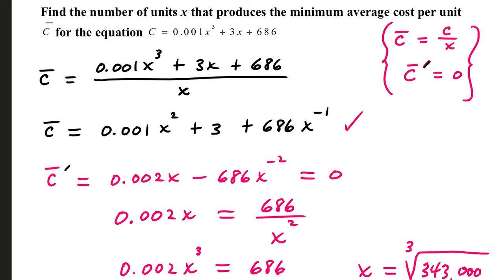Find the number of units x that produces a minimum average cost per unit, which is denoted with a C bar. The C bar notation is average cost. We are given a total cost function of 0.001x cubed plus 3x plus 686. Average cost is calculated by taking total cost divided by number of units. It's like if you were to average three test scores, you would add up all three test scores divided by 3.